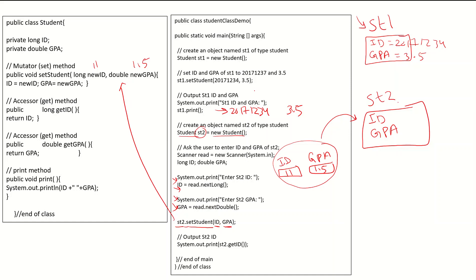These values are sent: 11 for ID and 1.5 for GBA, saved inside st2. The key idea is: if you need to read values from the user and save them in an object, you cannot do this directly. You must declare variables, read the values into them, and then call setStudent with those variables to store the values in the object.